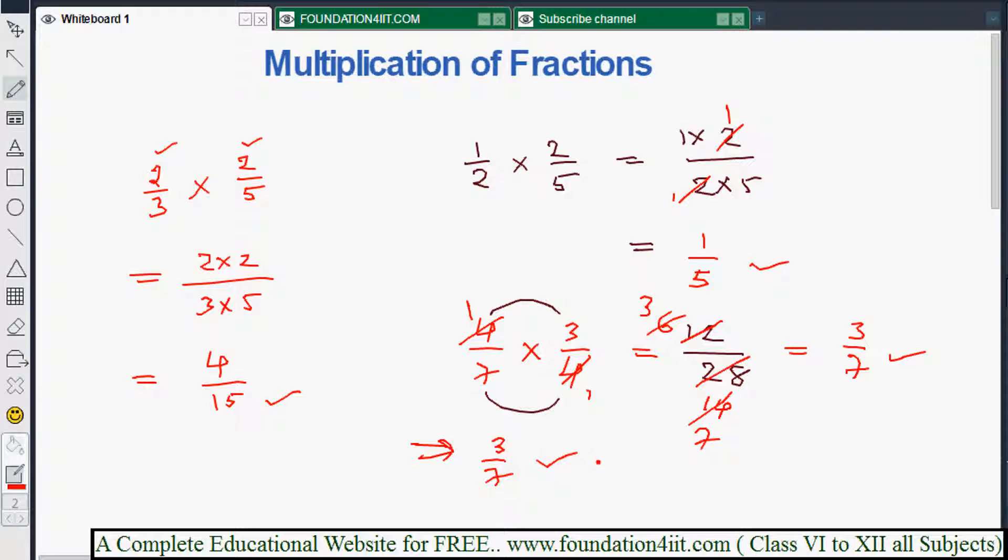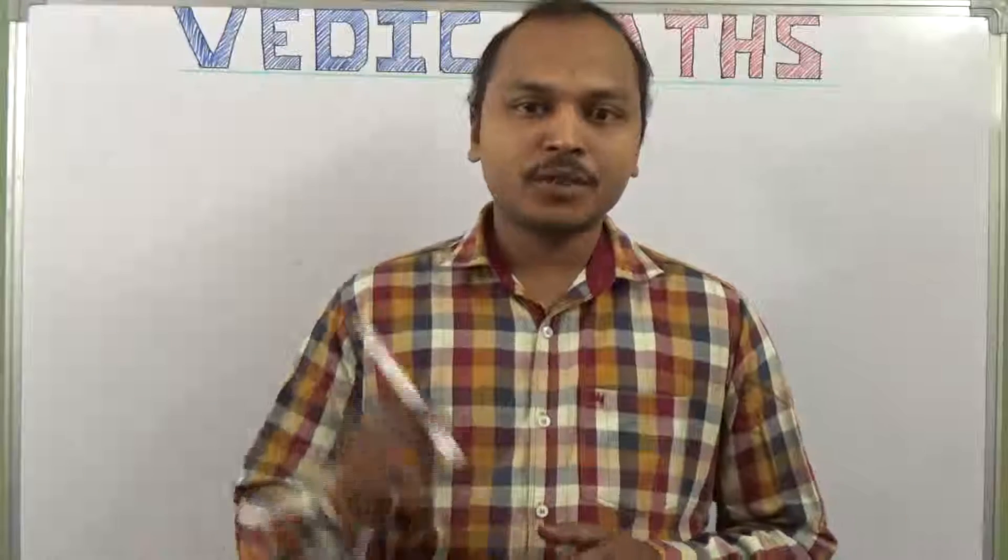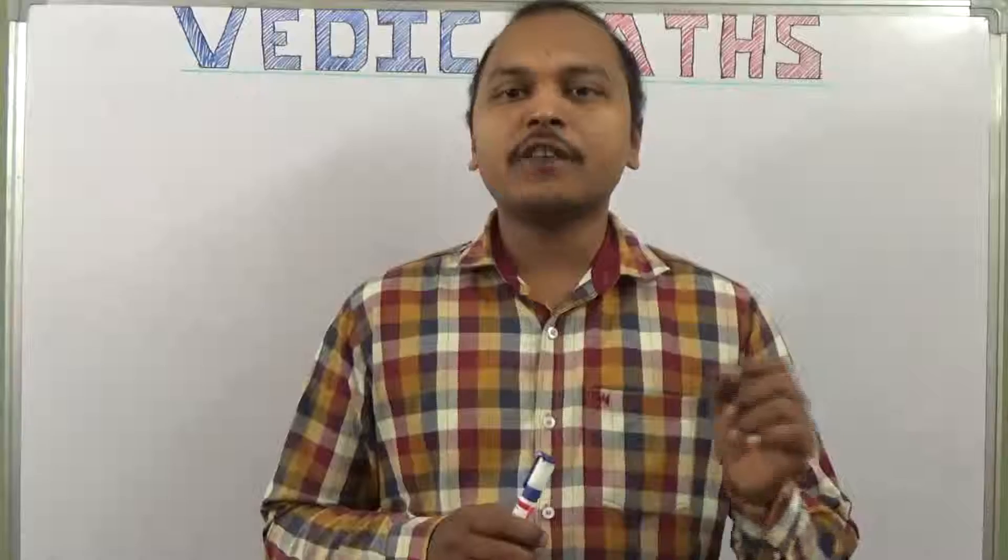This is all. Hence multiplication of fractions is very simple - just multiply numerators directly and denominators directly. You should not apply this method for adding and subtracting. Multiplication means just multiply numerator separately and denominator separately, then we need to simplify the solution. Thank you for watching this video.